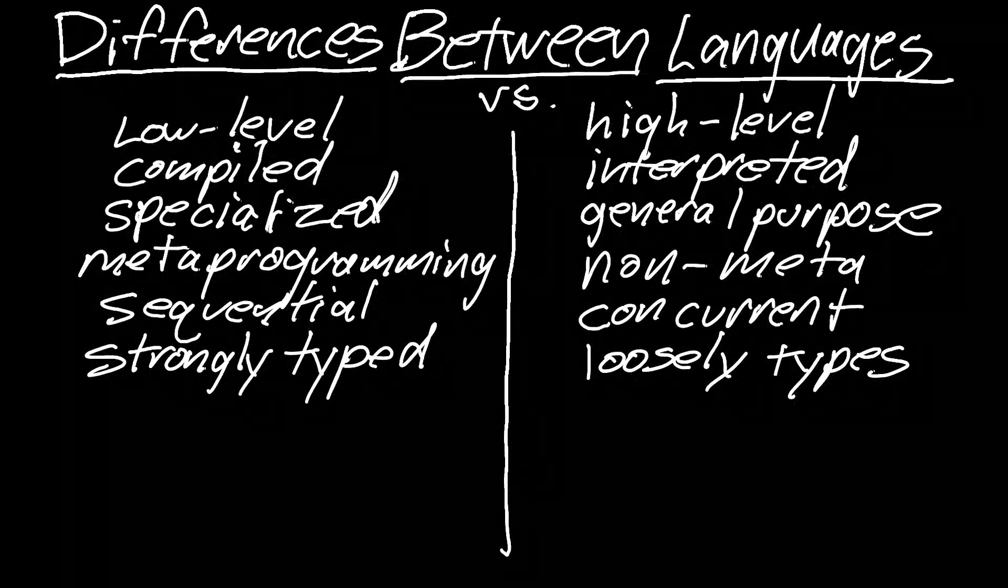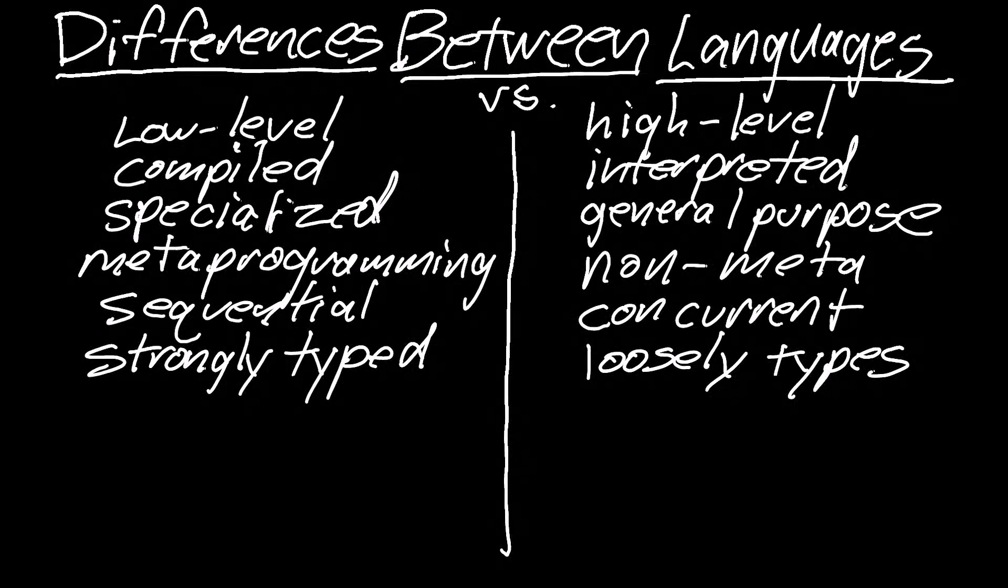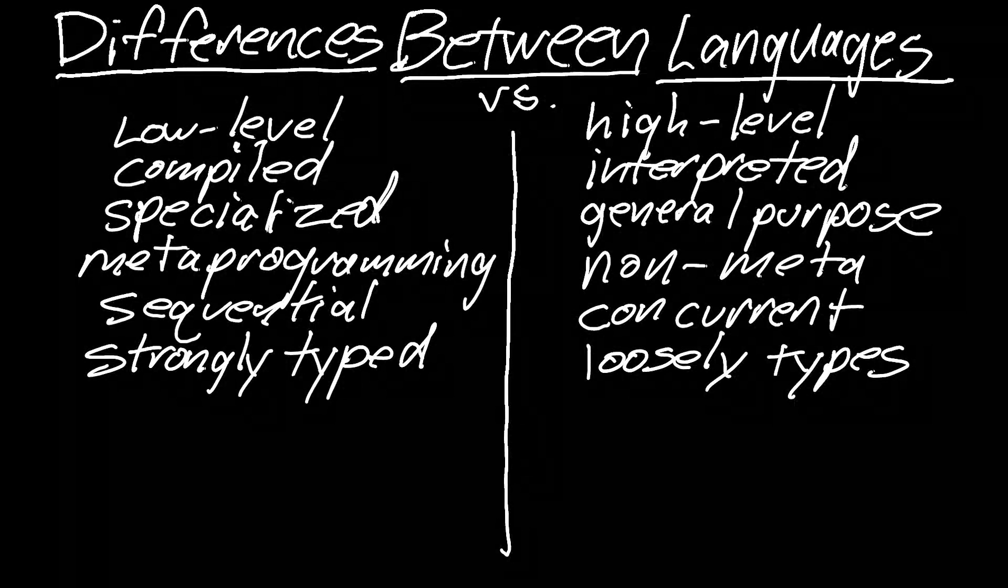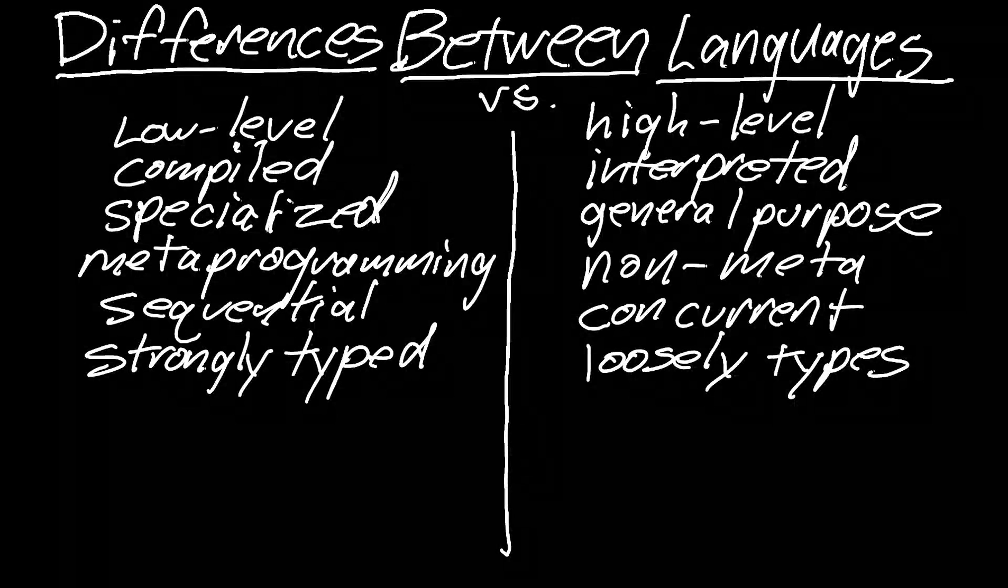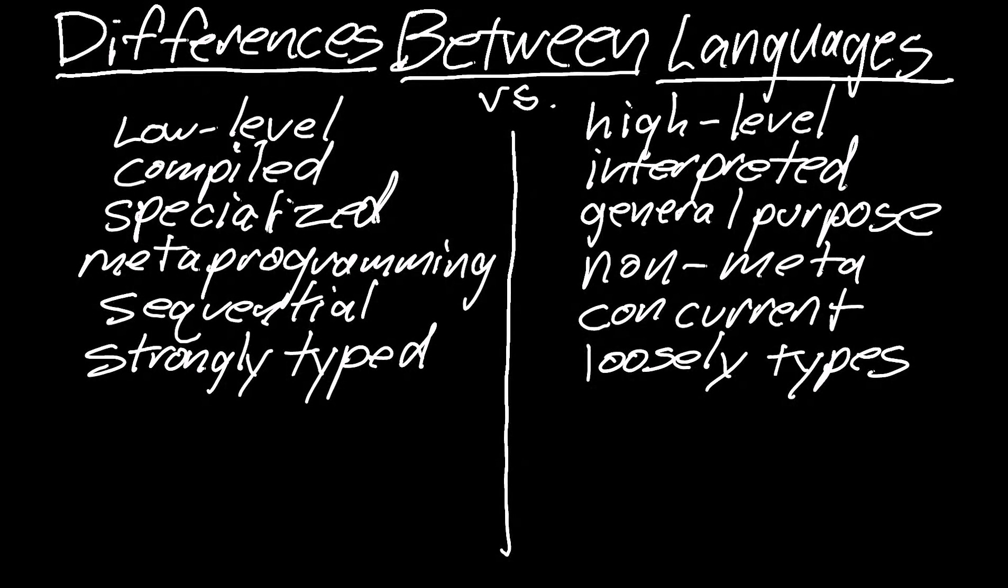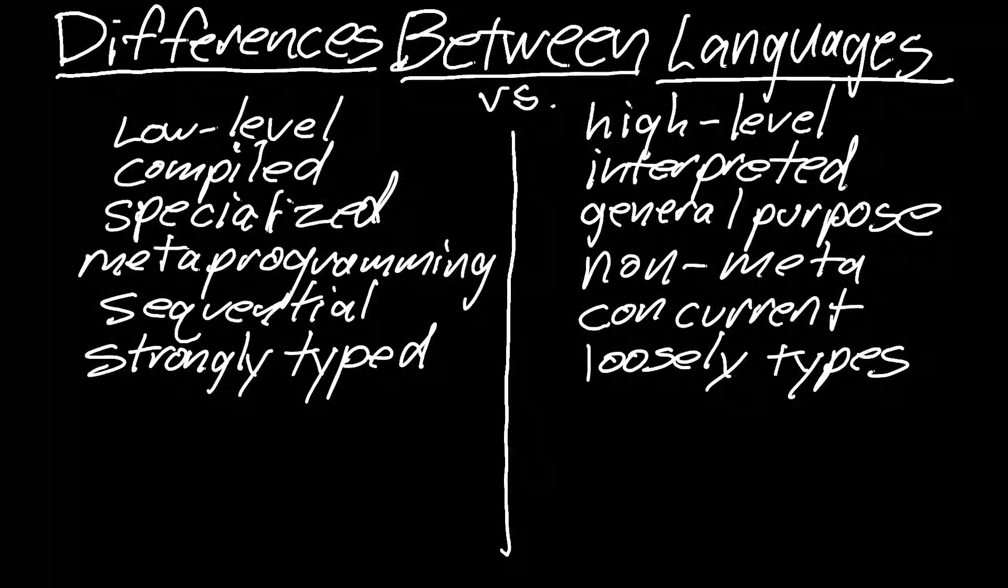And traditional thinking is that strongly typed is better because it keeps the bugs out. The compilers at compile time look specifically for errors, call them out, and you have to fix them. Now the truth is that the compilers are getting smarter on the loosely typed side, just like they're getting smarter on the interpreted side where execution speed is faster because they're building in compilers. At a similar location in the execution of the code, the interpreters are catching those mistakes with loosely typed variables.